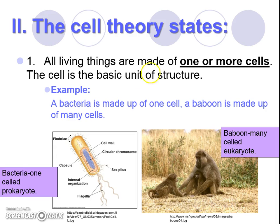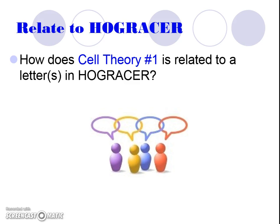What do we mean by that? If it's a bacteria, it's made up of one cell. But a baboon, which is bigger, is also made up of cells. We call bacteria a type of cell called a prokaryote — we'll learn more about that. We call baboons multicellular and more complex — we call them eukaryotes. We'll learn about what prokaryote and eukaryote are later. The big deal is that it didn't matter what it was — all living things are made up of these basic building blocks called cells. And because it's our basic unit of structure, we might relate this back to HOGSRACE. All living things are made up of cells — that's the C in HOGSRACE.